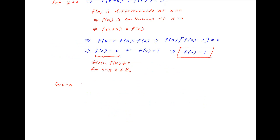We are also given that f'(0) = 2. f'(0) can be written as the limit of [f(h) − f(0)] / h as h tends to 0, and this equals 2. Let's call this equation 1.